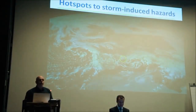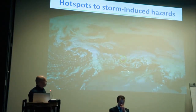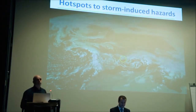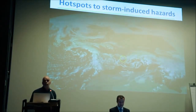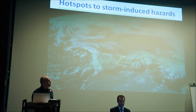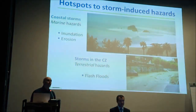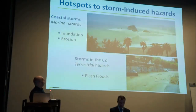We chart extreme events, and here we are talking about storm-induced hazard. We lost the lowest part of the presentation here, but this is a storm that took place in October 2003 — a cyclone in the Mediterranean very close to the Catalan coast. When we talk about extreme events and storm impacts on the Catalan coast, we are referring to coastal storms and storms in the coast.